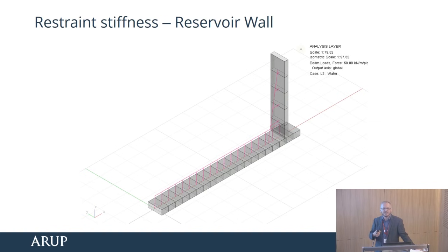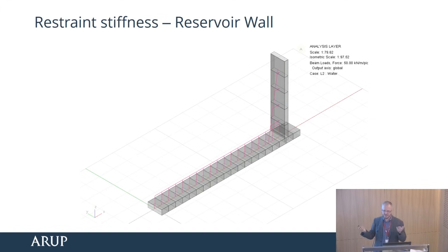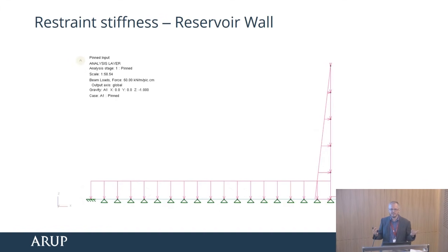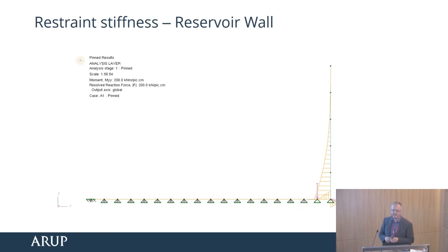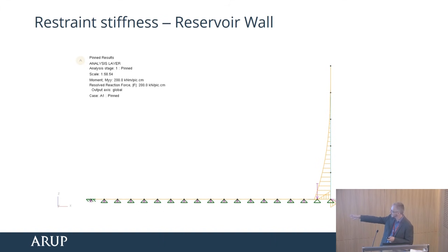I first discovered this a long time ago as a graduate engineer. We were modelling a water reservoir — a concrete structure with water inside and ground on the outside. I had to model this to work out the moments and shear forces. Back in that analysis, we only had 2D frames — nothing as sophisticated as we have now. I knew the base was continuously supported by the ground, so I put pin supports all the way along the bottom. I ran the analysis and the bending moment in the wall looked just as I expected, but the bending moment in the base was crazy — a sort of zigzag — with very strange, very high reactions, both positive and negative, around those support points.